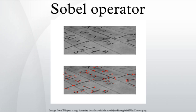Where here denotes the two-dimensional convolution operation. Since the Sobel kernels can be decomposed as the products of an averaging and a differentiation kernel, they compute the gradient with smoothing.